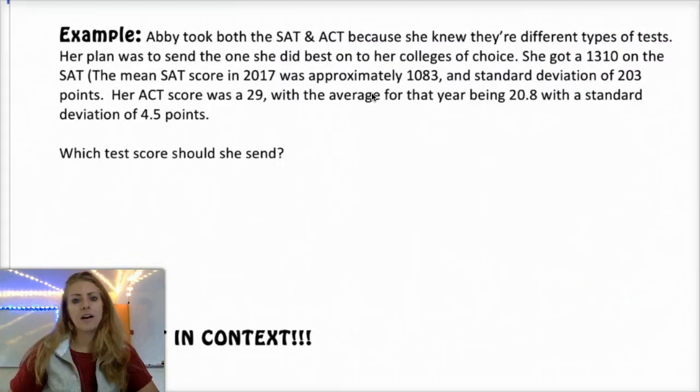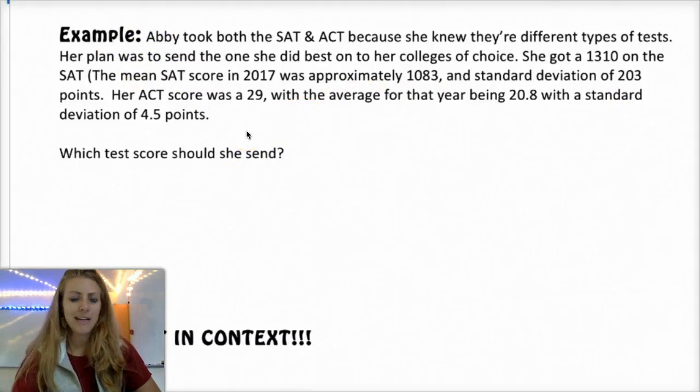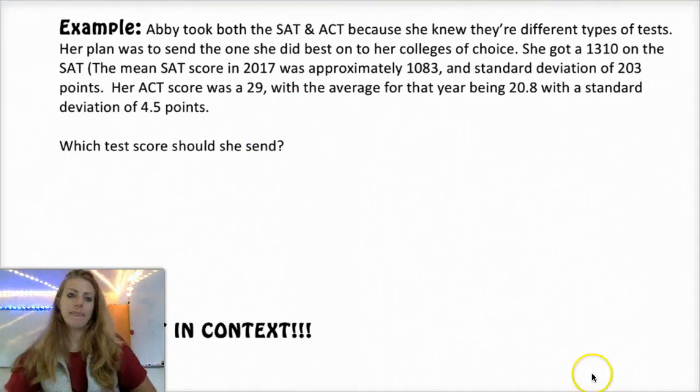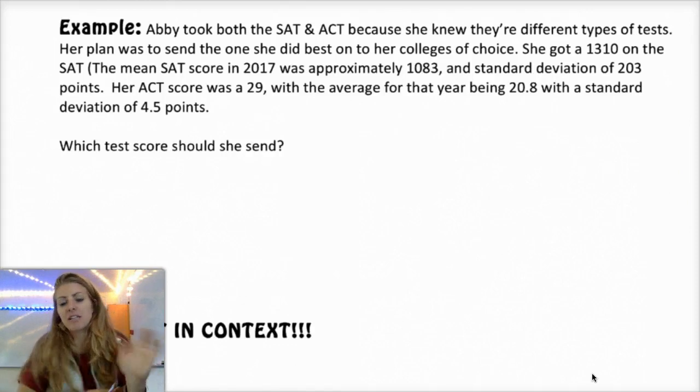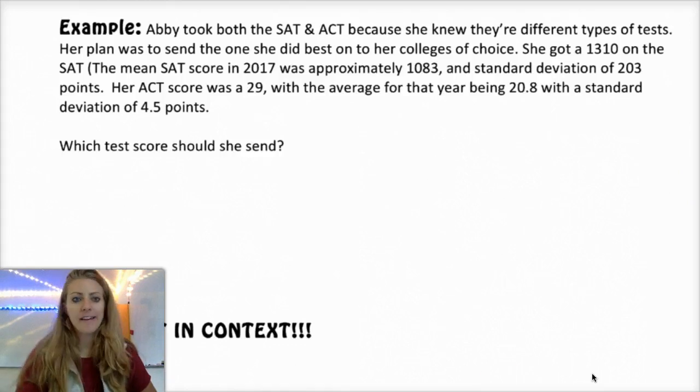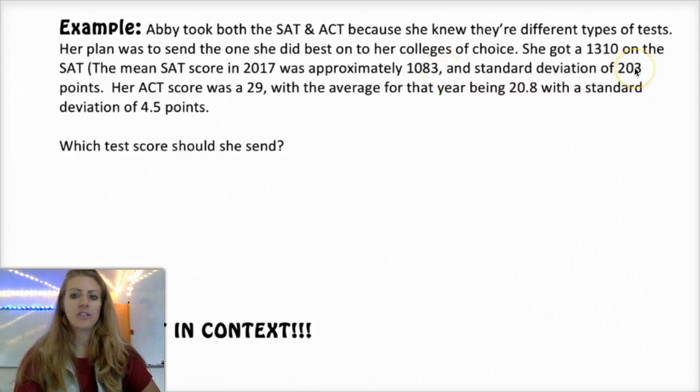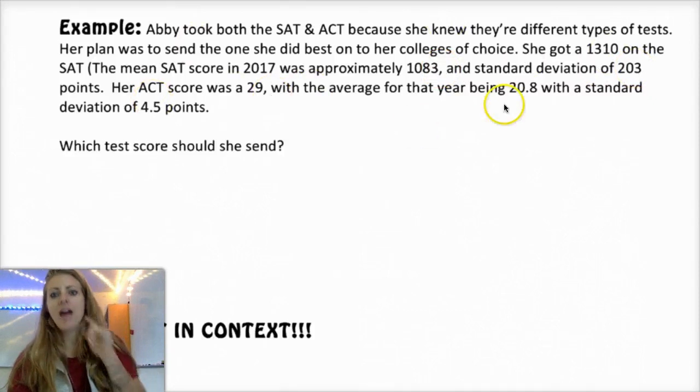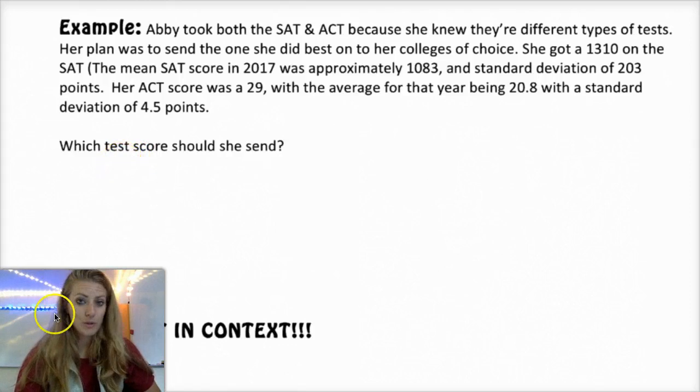So this example, you would use the Z-score for. So go ahead and give this a try. For this problem, you've got a student who's taken both the SAT and the ACT for college. She wasn't sure which one she did better on. So her plan was to send the one she did the best on to her colleges. She got a 1310 on the SAT. The mean in 2017 was 1083 with a standard deviation of 203. And then her ACT score was 29 with the average for that year being a 20.8, standard deviation of 4.5. So which test did she do better on?